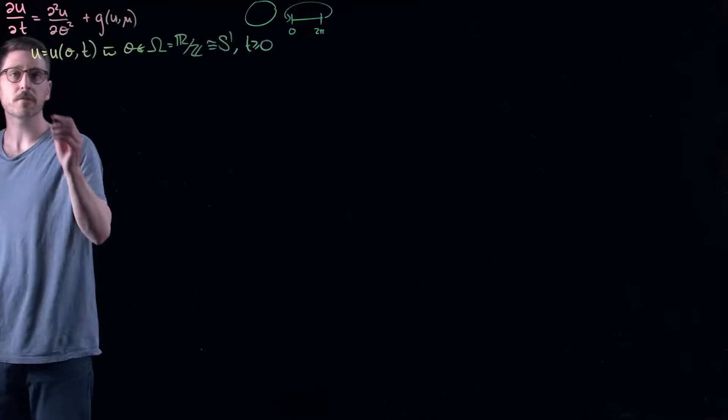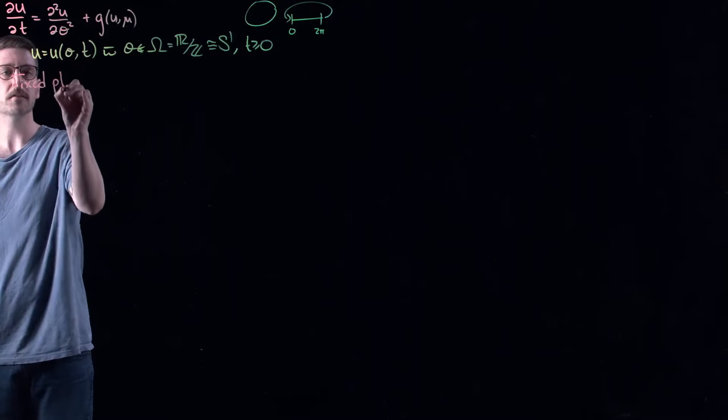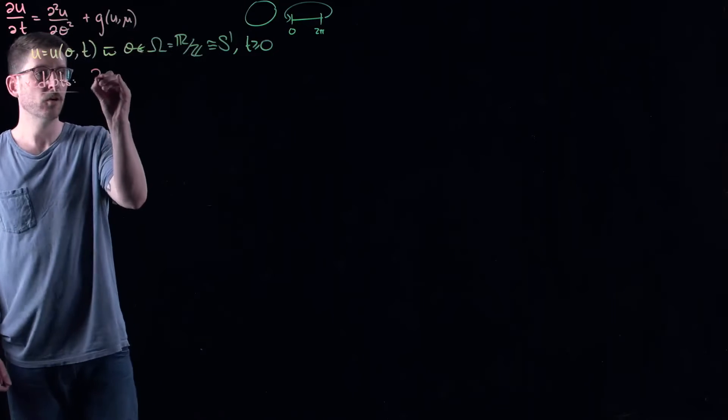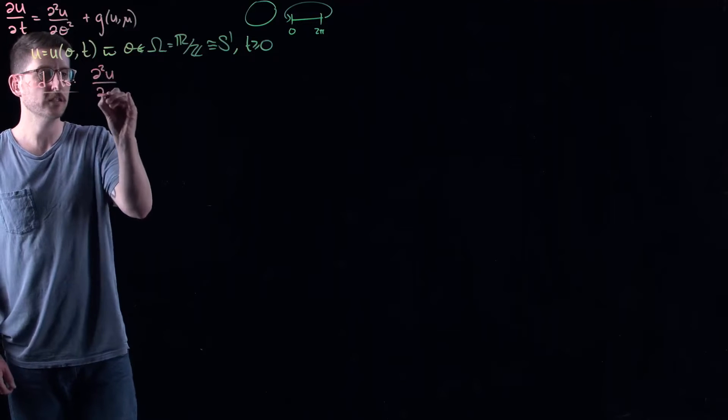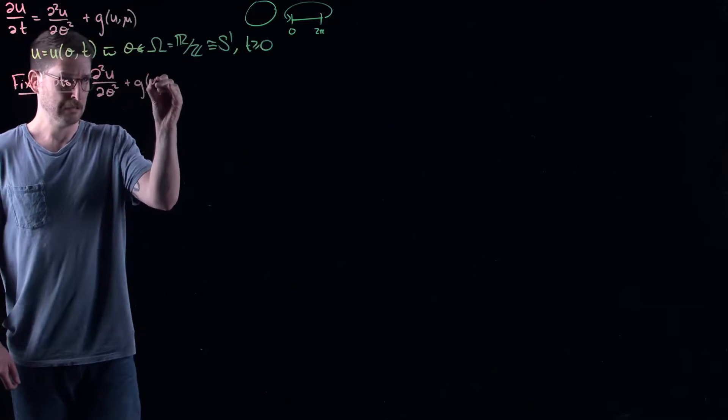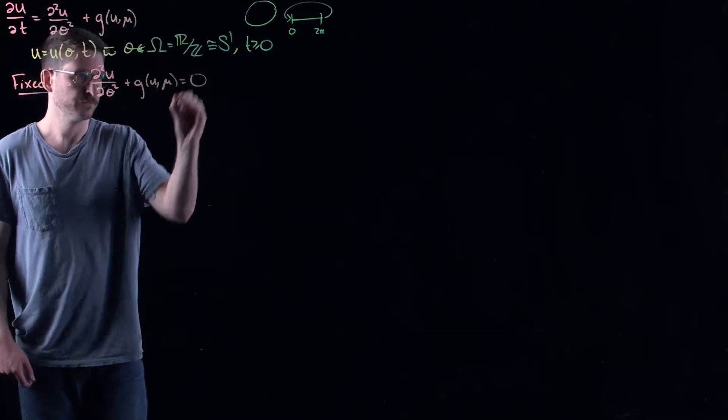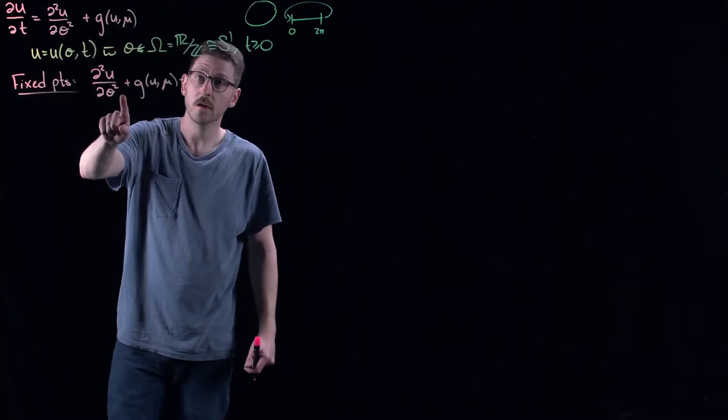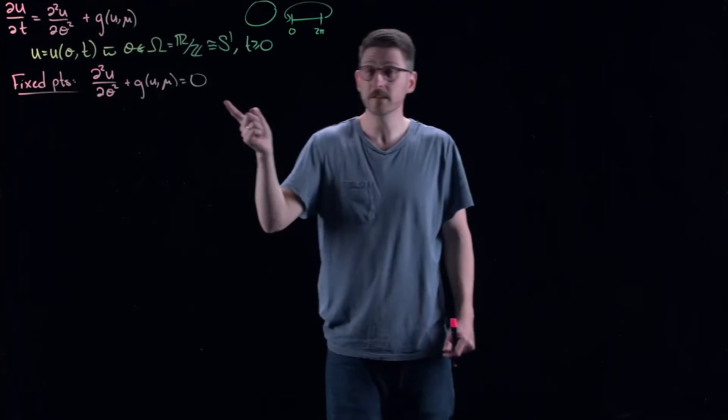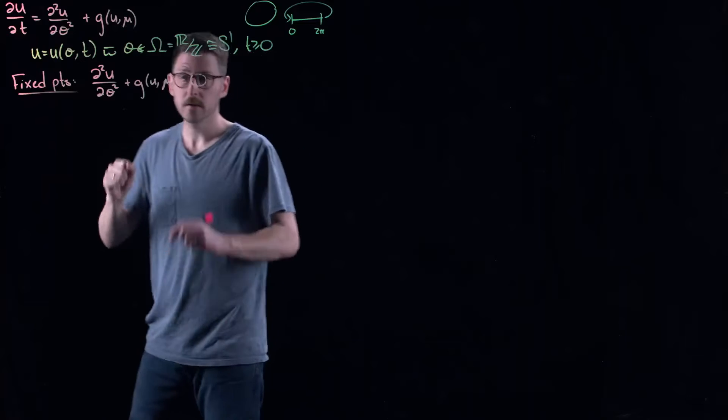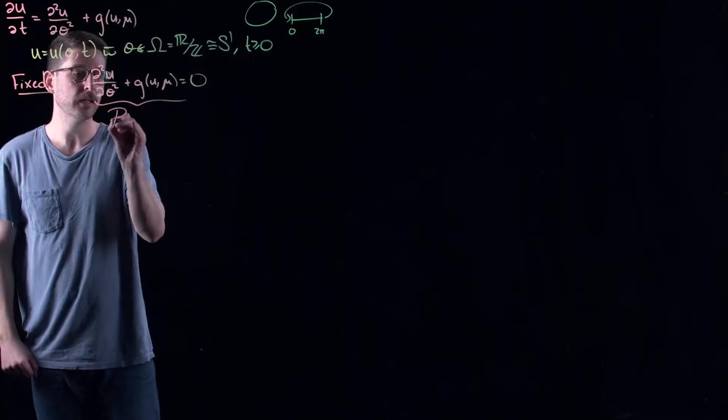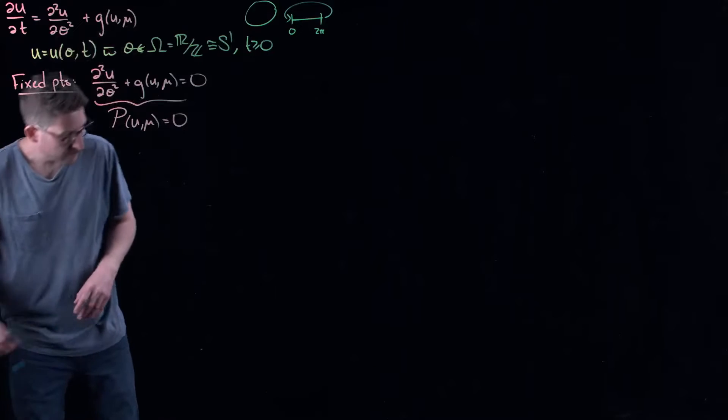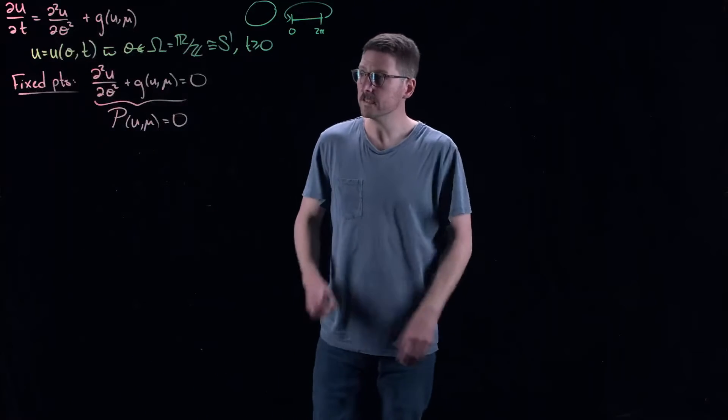Now, in this case, I could ask myself for fixed points. Anytime I start with a dynamical system, I start by asking myself, what are the fixed points? In this case, fixed points are going to be solutions to this ordinary differential equation. They don't change in time, so the time derivative becomes zero. These are periodic functions of the spatial variable theta. So equilibria or fixed points in this case are functions. That's a weird thing. So sometimes we would write this in like operator form. I'd like to maybe use the form P and really we would say P(u) of mu is equal to zero. But the question is, what spaces should you live in?